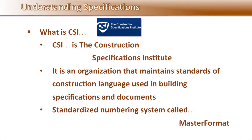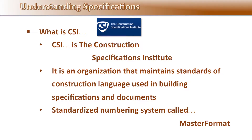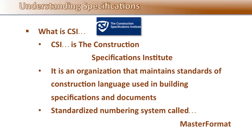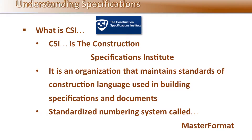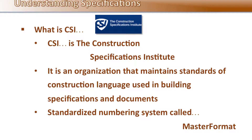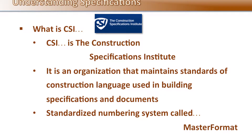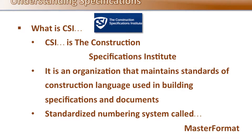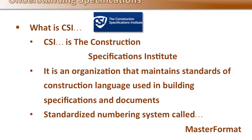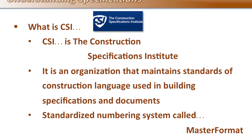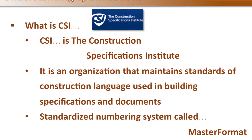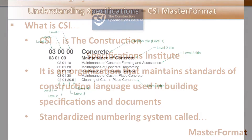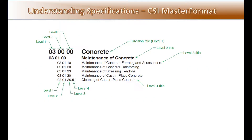So what is CSI? CSI is the Construction Specifications Institute. It is an organization that maintains standards of construction language used in building specifications and documents. CSI has developed a standardized numbering system called Master Format for identifying requirements, products, and activities used in the construction industry. The Master Format system uses a six-digit numbering system to organize information.